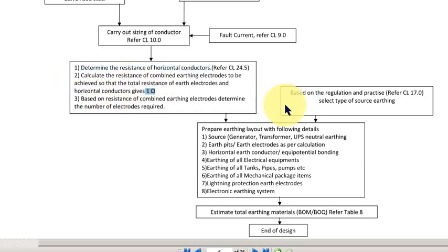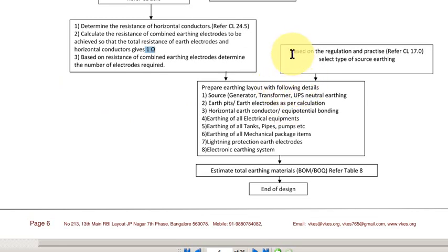The next step is, based on the regulation and practice, select the type of source earthing. The source may be TN-S or TT or IT systems which I have already explained previously. So you have to go to the regulation and select it.